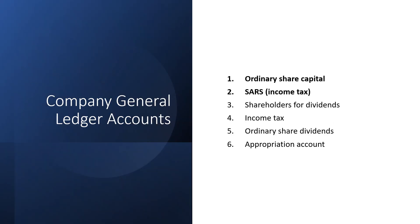These are the most common general ledger or T accounts used by companies. The ledger accounts are: ordinary share capital, SARS income tax, shareholders for dividends, income tax, ordinary share dividends, and appropriation accounts. The first two accounts are the most commonly asked company ledger accounts in past matric papers. We shall go into more detail on each of these ledger accounts in the following slides.